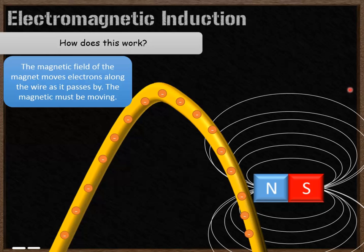The magnetic field of the magnet moves the electrons along the wire as it passes through the coil. The magnet must be moving for this to happen. If the magnet is stationary, the electrons aren't affected by the magnetic field. The direction the magnet travels determines which direction the current flows around the circuit.